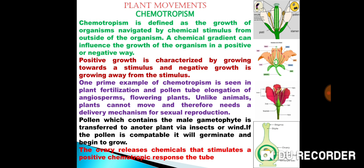Positive growth is characterized by growing towards a stimulus and negative growth is growing away from the stimulus. One prime example of chemotropism is seen in plant fertilization and pollen tube elongation of angiosperms, flowering plants.